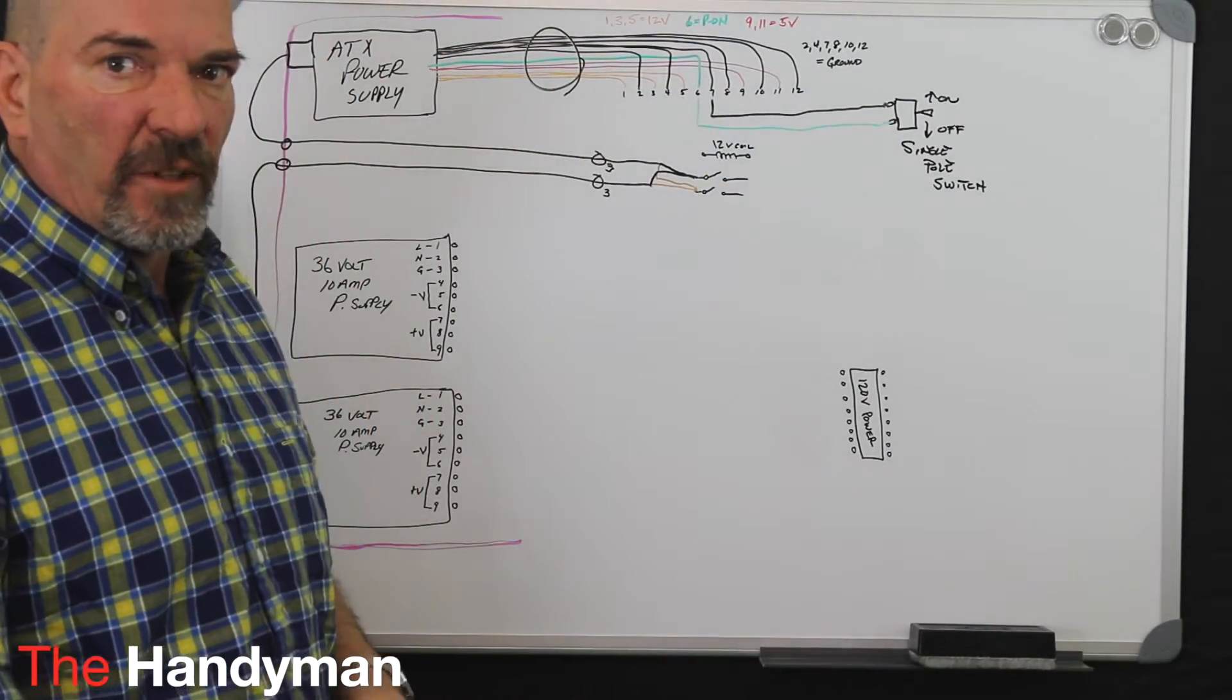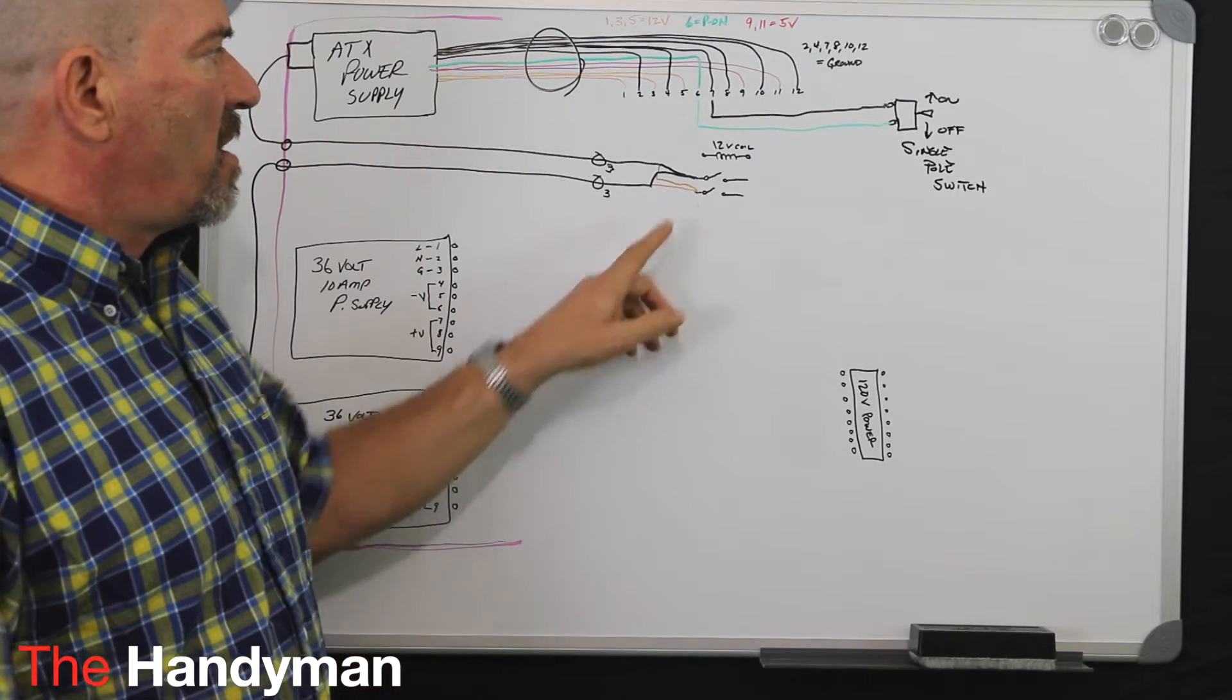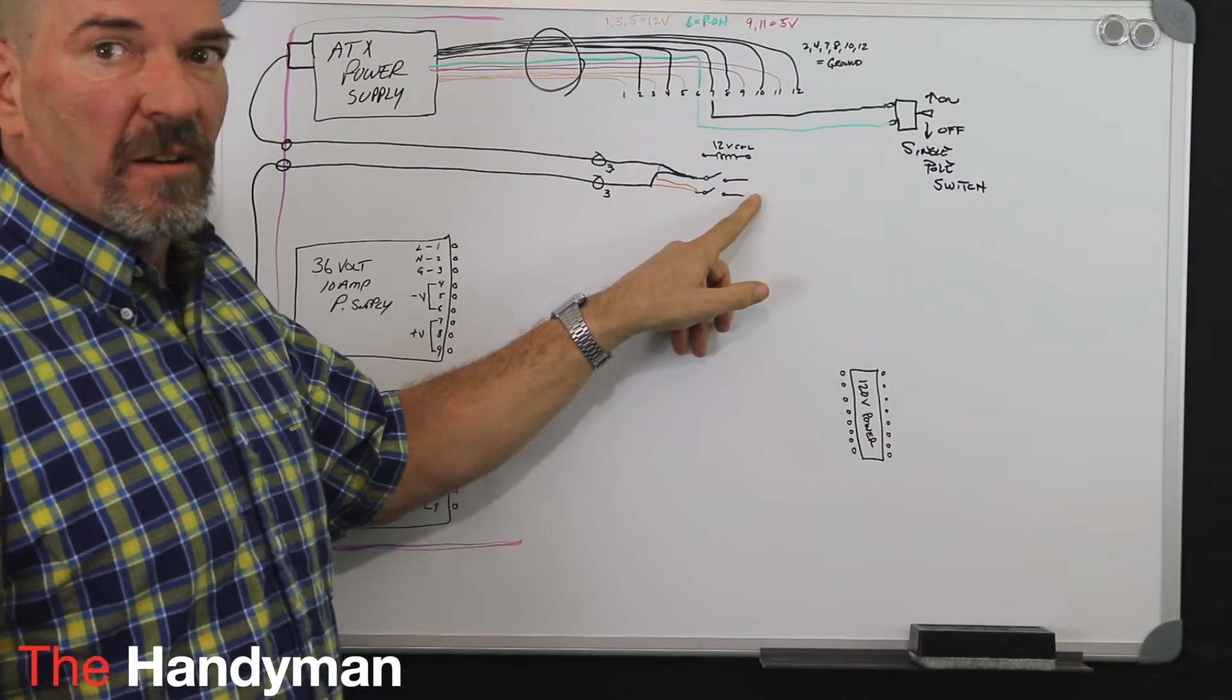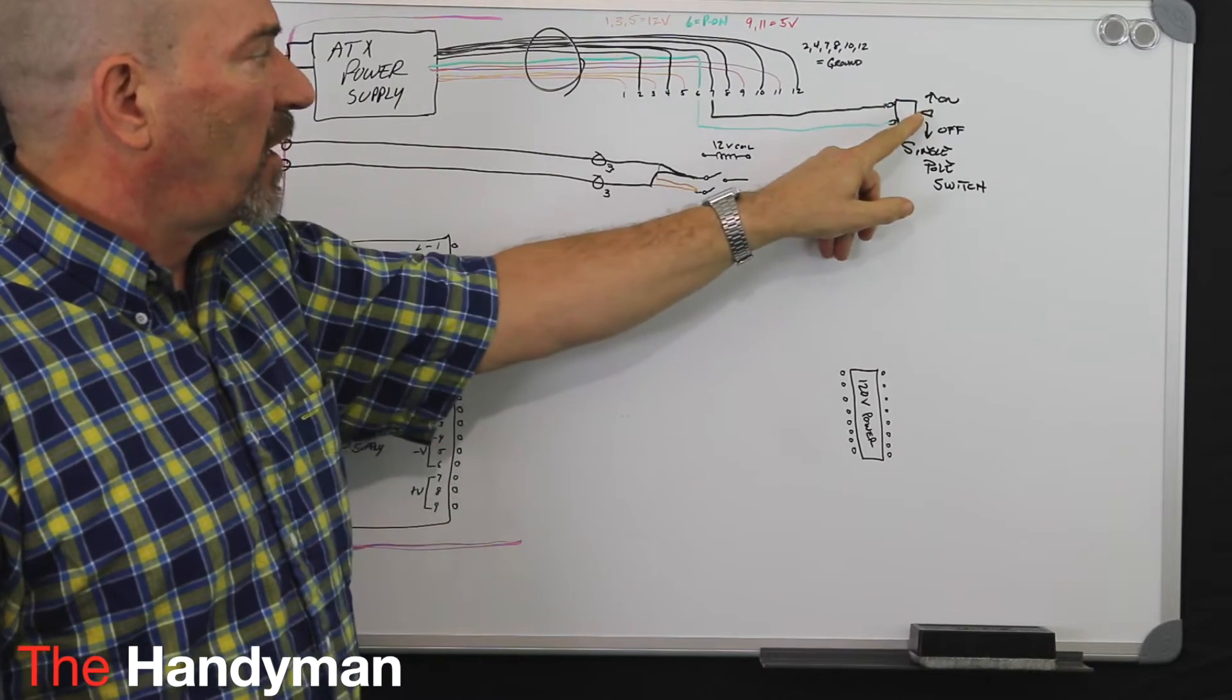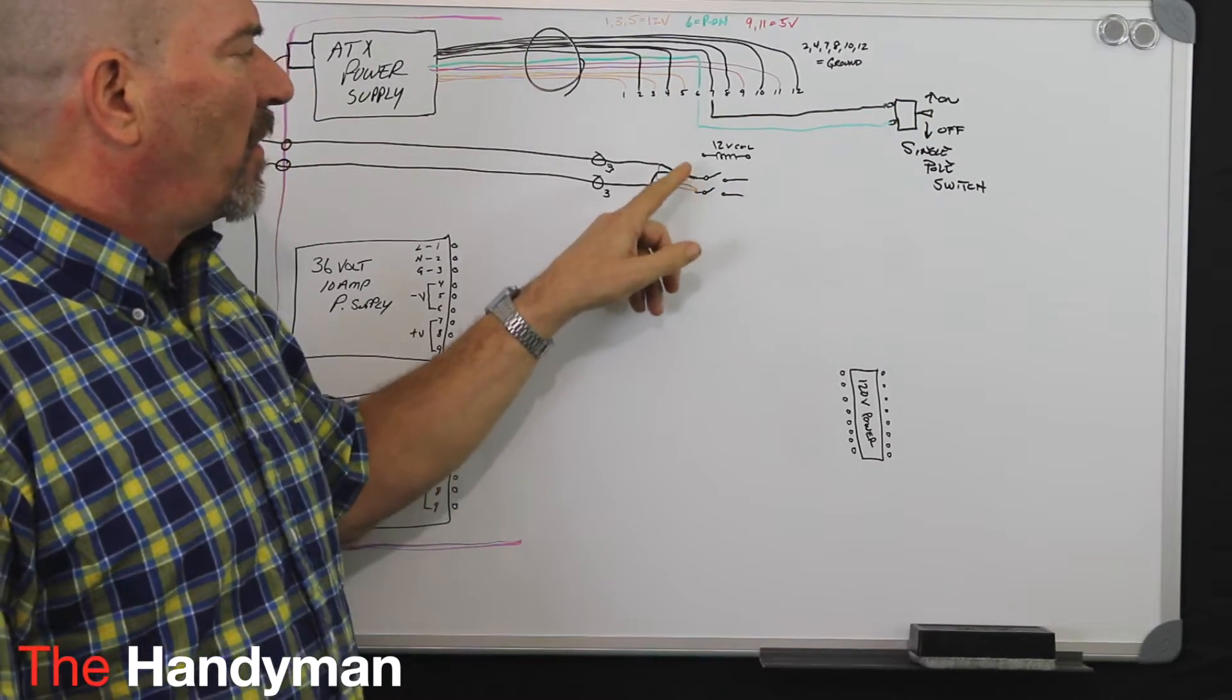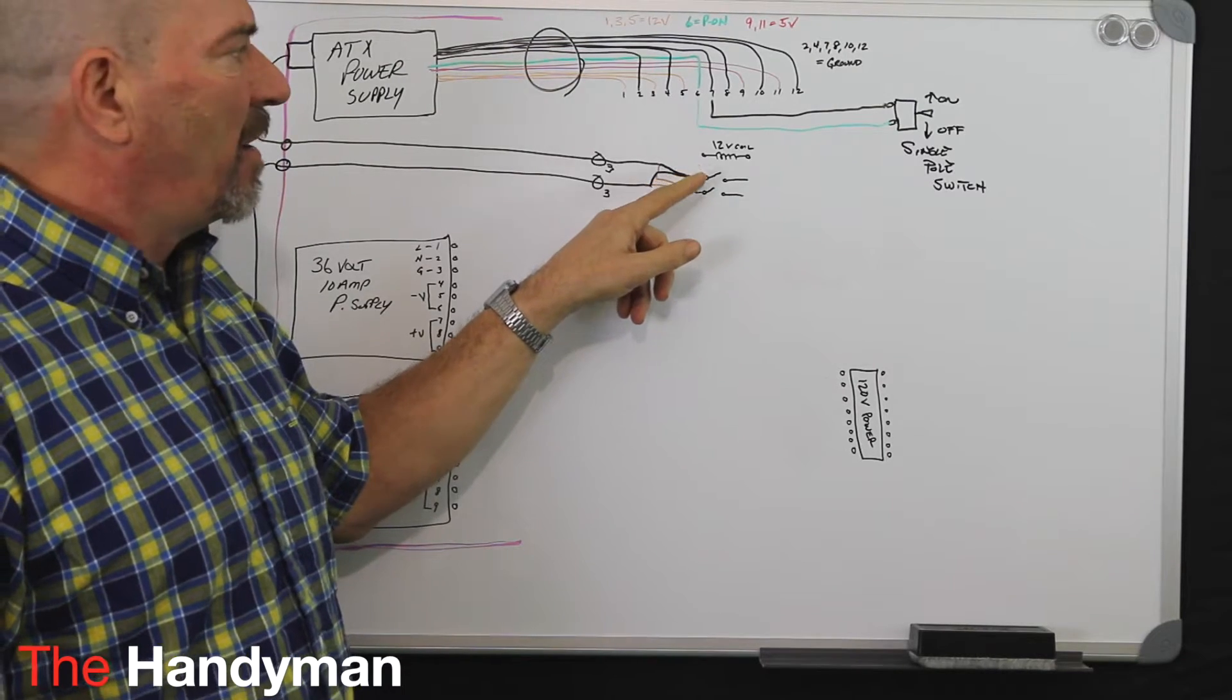Now don't get these contacts confused. You do not want to run the white on one side of the normally open and the black on the other. That's not good because when you fire up this switch, bang, that's a dead short. They need to go to one side and parallel them under each terminal screw.